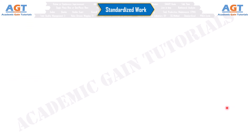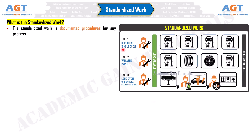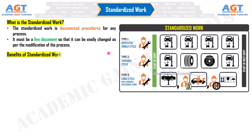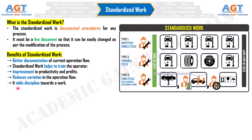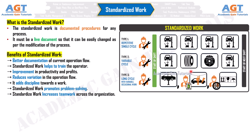Number 25: Standardized Work. Standardized work is documented procedures for any process. It must be a live document so that it can be easily changed as per modifications to the process. Benefits: Better documentation of current operation flow, helps train operators, improves productivity and profits, reduces variation in the operation flow, adds discipline towards work, promotes problem solving, and increases teamwork across the organization.